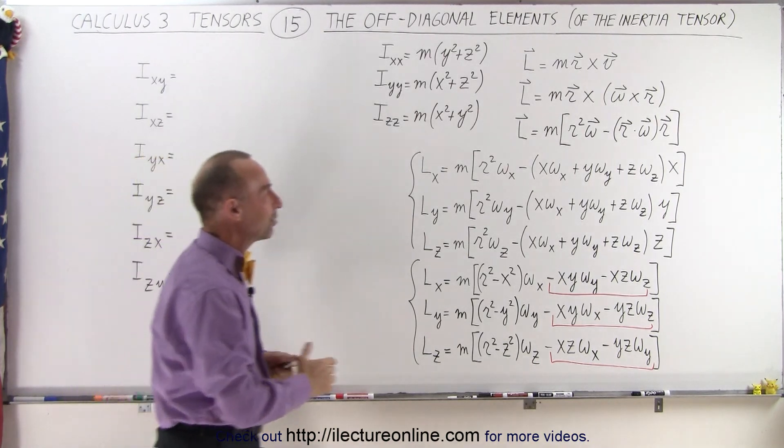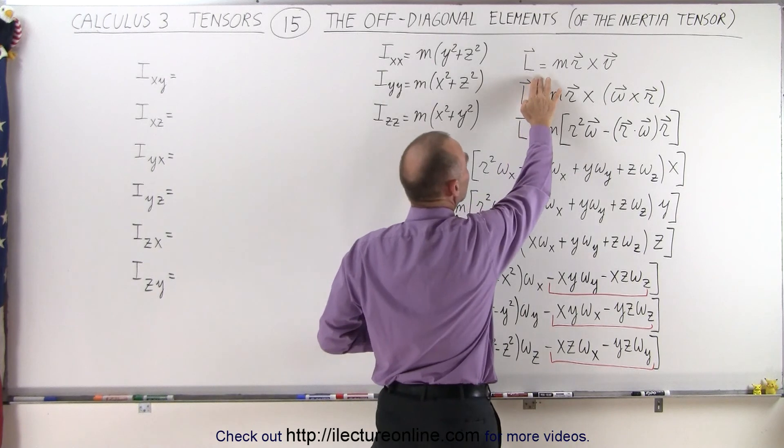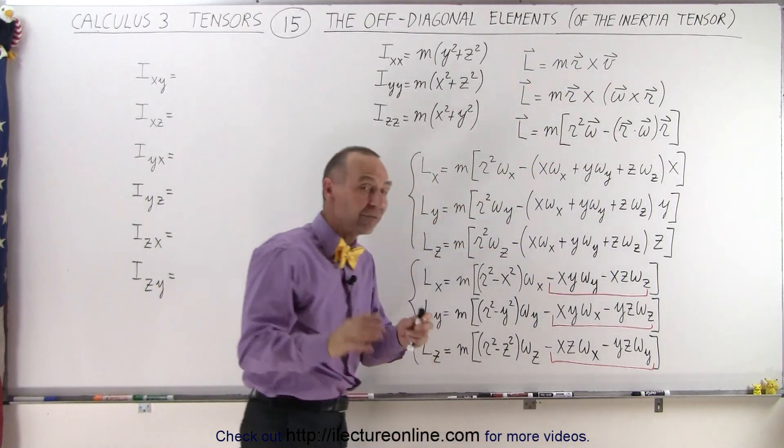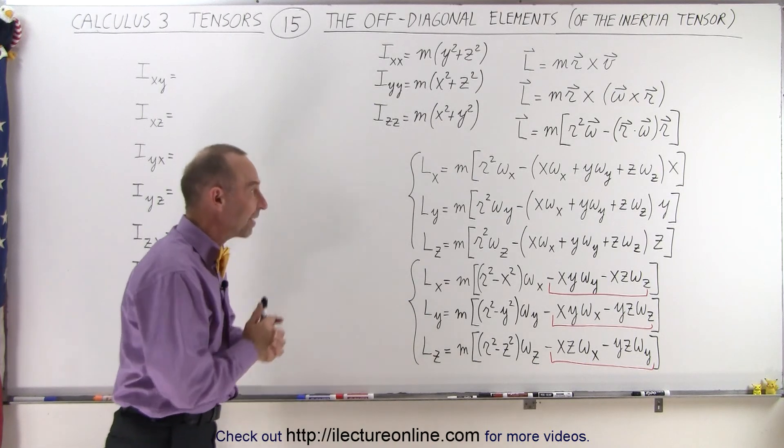So we start with the very same equation where we take the moment of inertia being equal to the mass times a cross product between the position vector and the velocity of the particle that has the mass m.